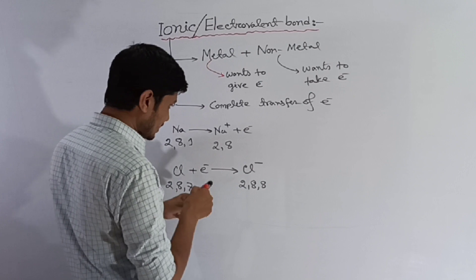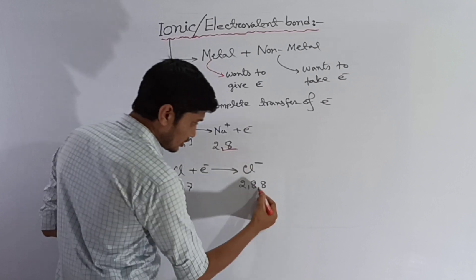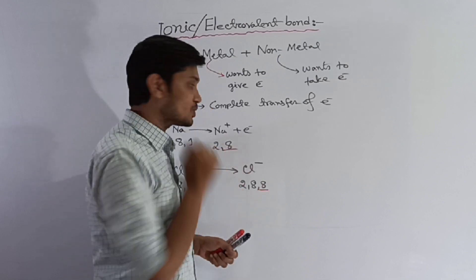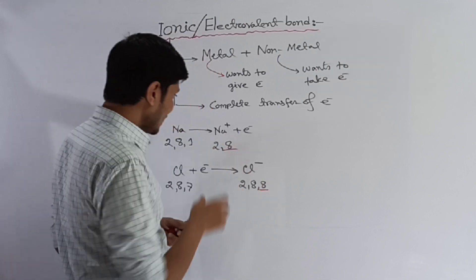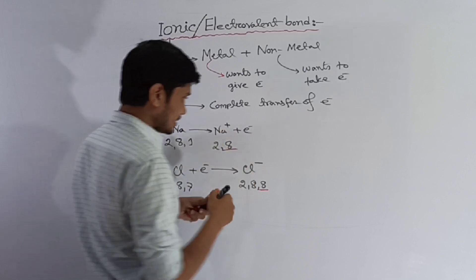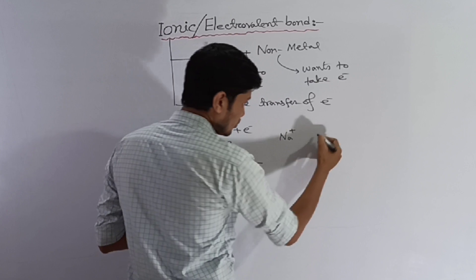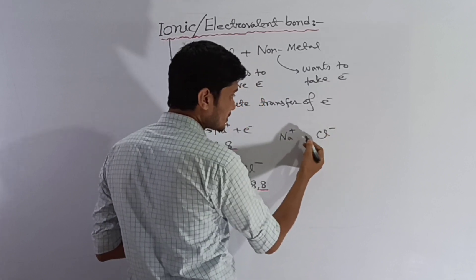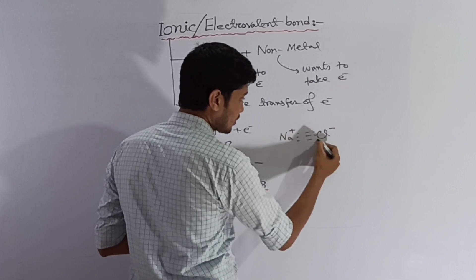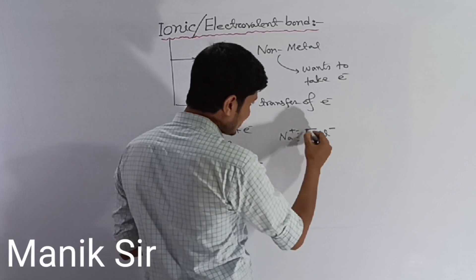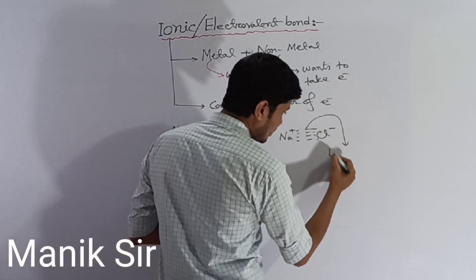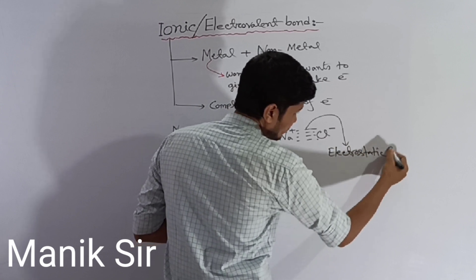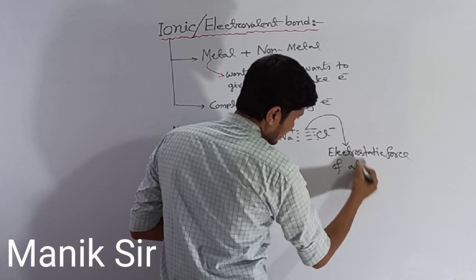When sodium gives up its electron and becomes sodium plus, and chlorine gains it to become chlorine minus, opposite charges are attracted to each other. This attraction between the positive sodium ion and the negative chloride ion is called the electrostatic force of attraction, and this is what holds the ionic bond together.